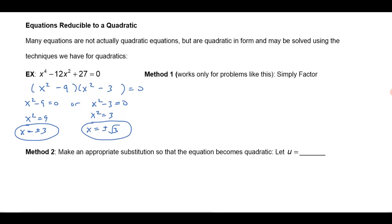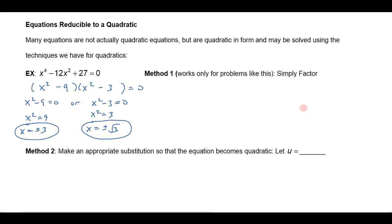Now another way you could do that same problem — one that illustrates the more general principle of equations that are reducible to a quadratic — would be to make a substitution. Think of this as x squared, the quantity squared, minus 12 times x squared plus 27 equals 0. When you write it like that, you can see that this is an equation that's quadratic in x squared. That's the language we use to describe it.